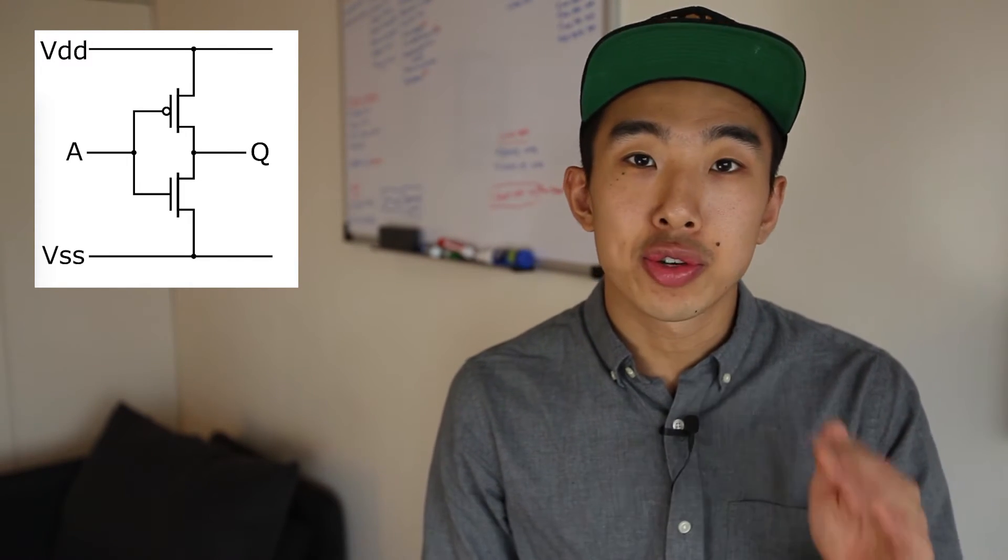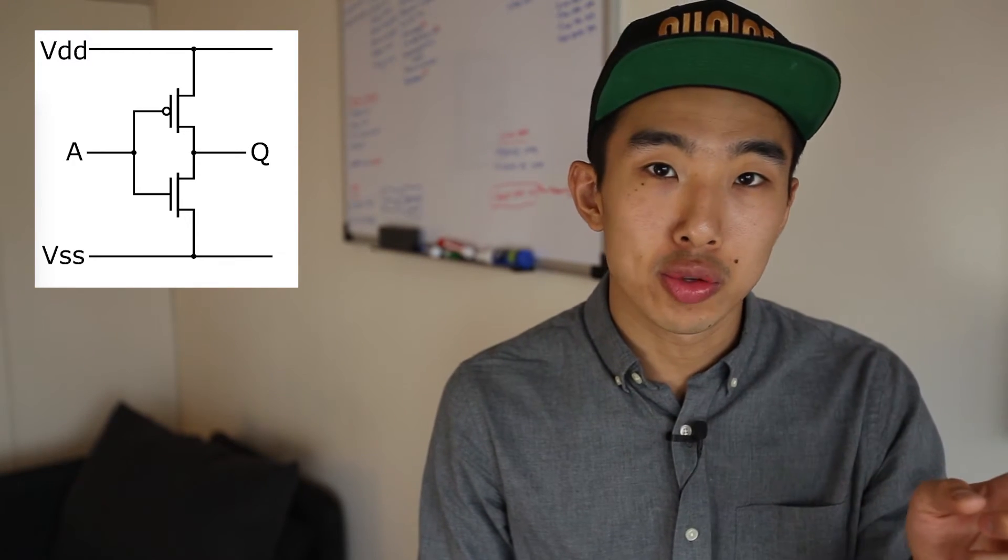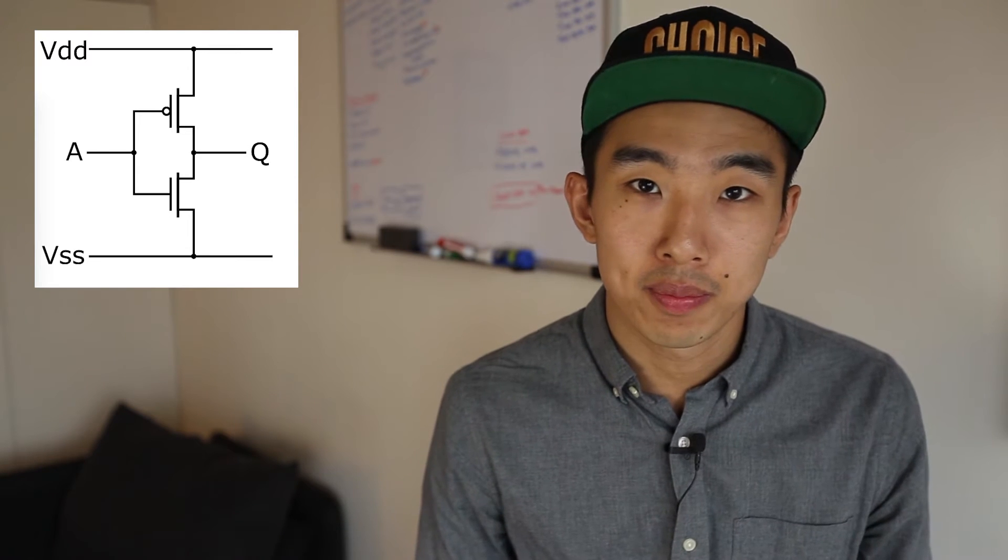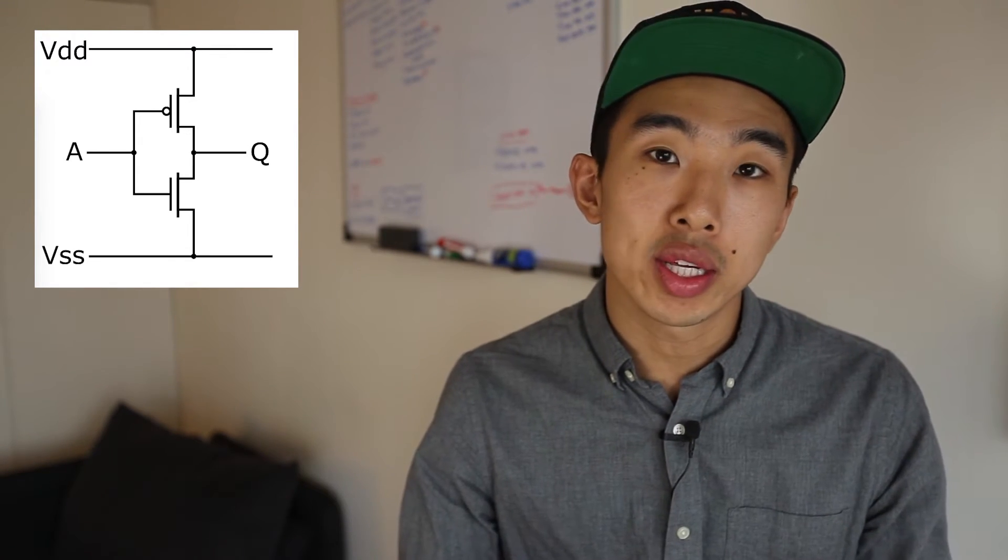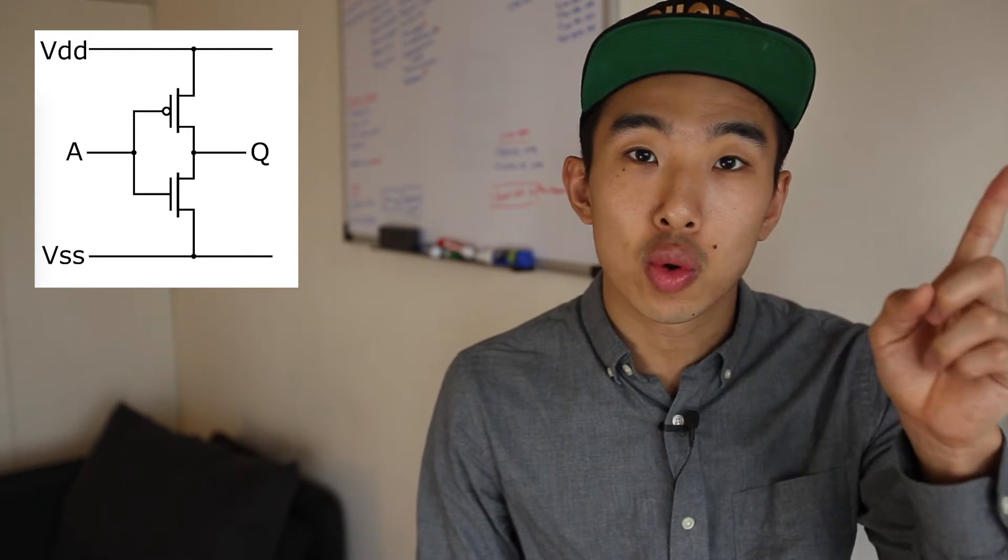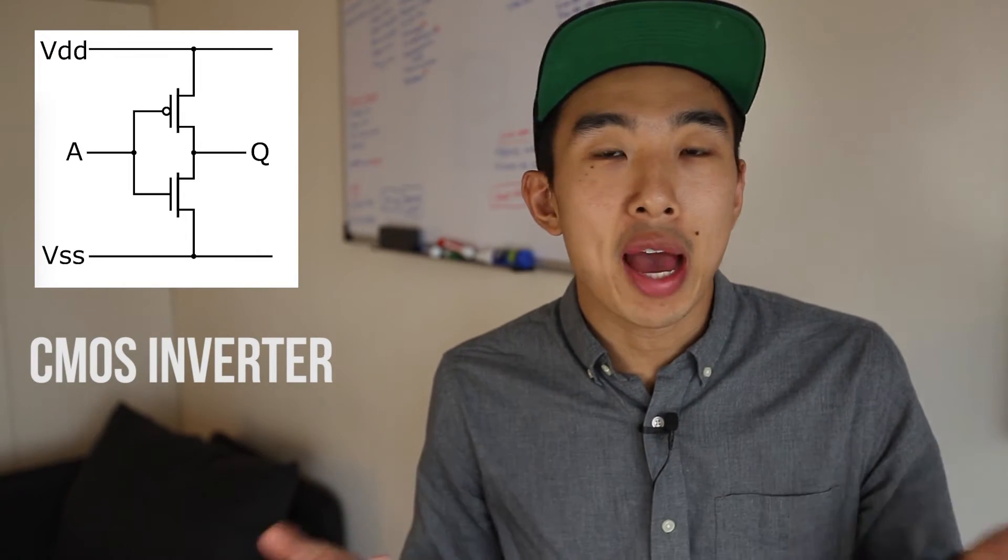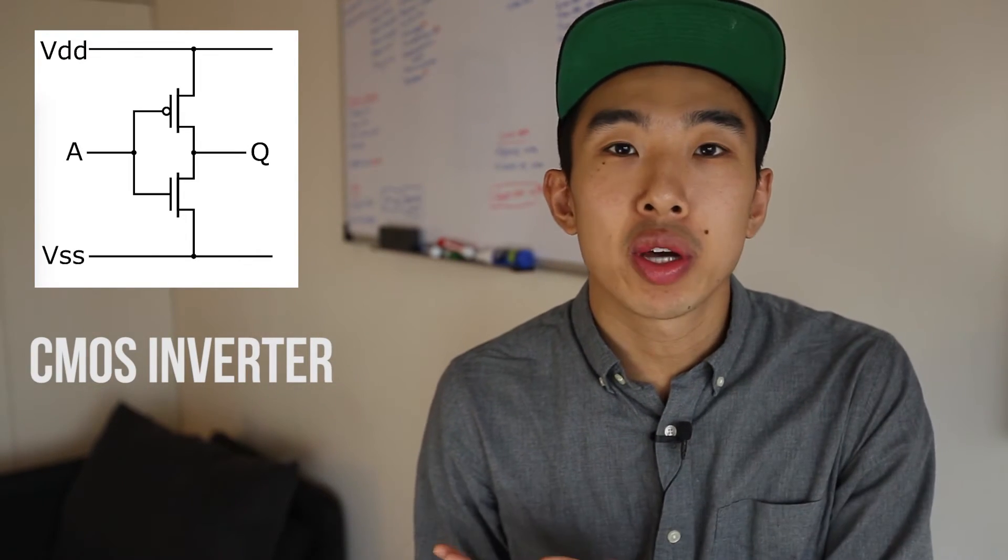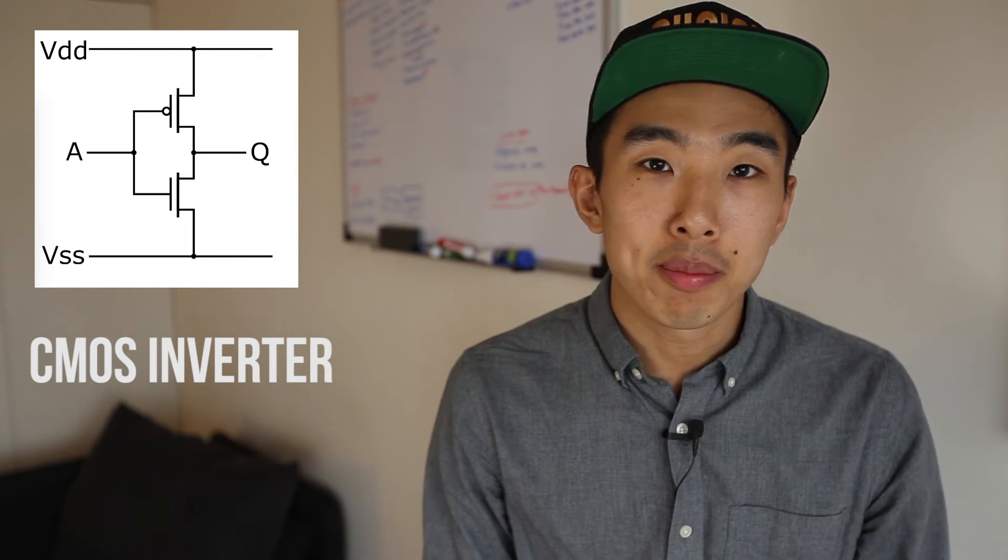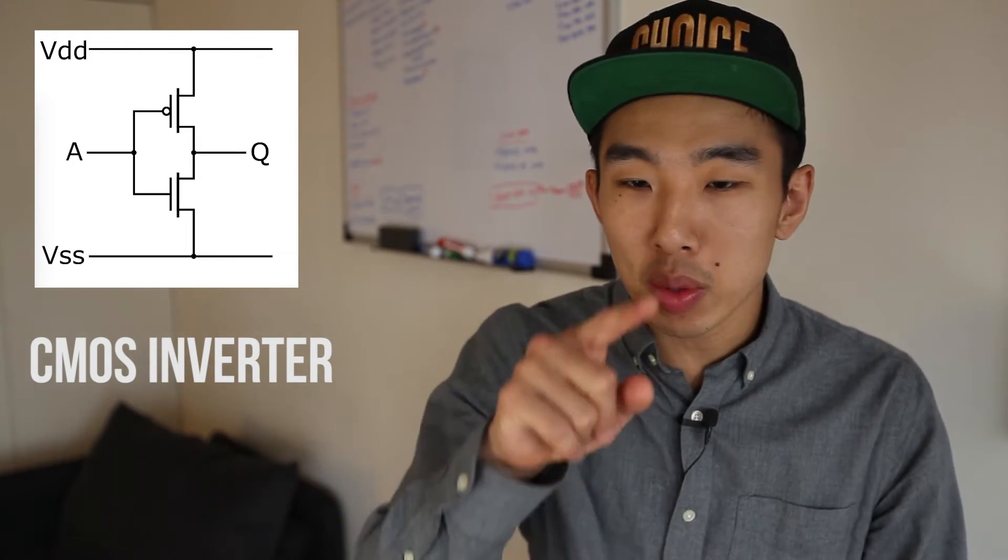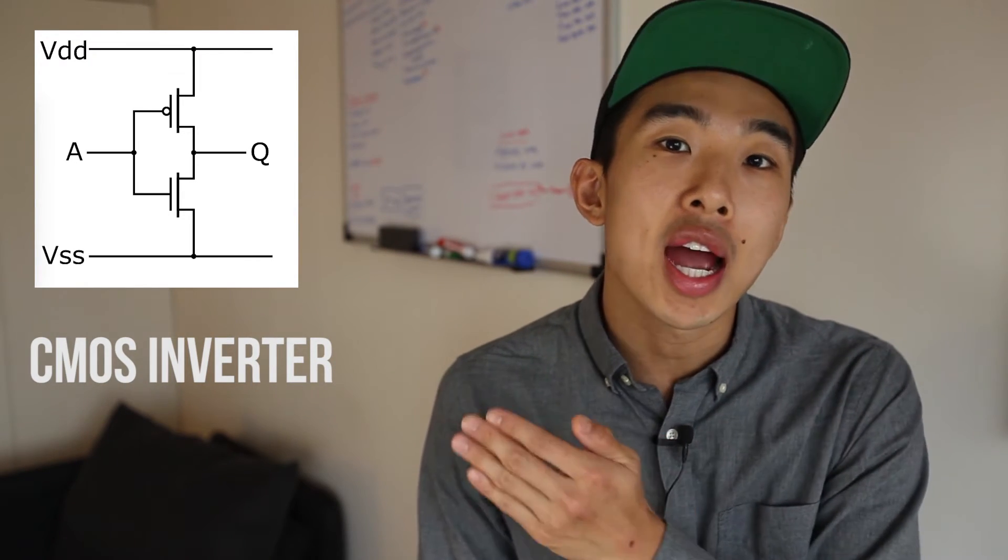If A has electricity, Q gets connected to ground and not the voltage source. So Q has no electricity. Now the flip side, if A has no electricity, Q is actually going to get connected to the voltage source, and it's going to have electricity flowing. So what's actually happened here, it's pretty much exactly what we're talking about. This is an inversion of electricity. It's just inverting the input, right? Most people don't draw like this. Everyone just draws it as that triangle thing, but behind the scenes, this is kind of what's happening.